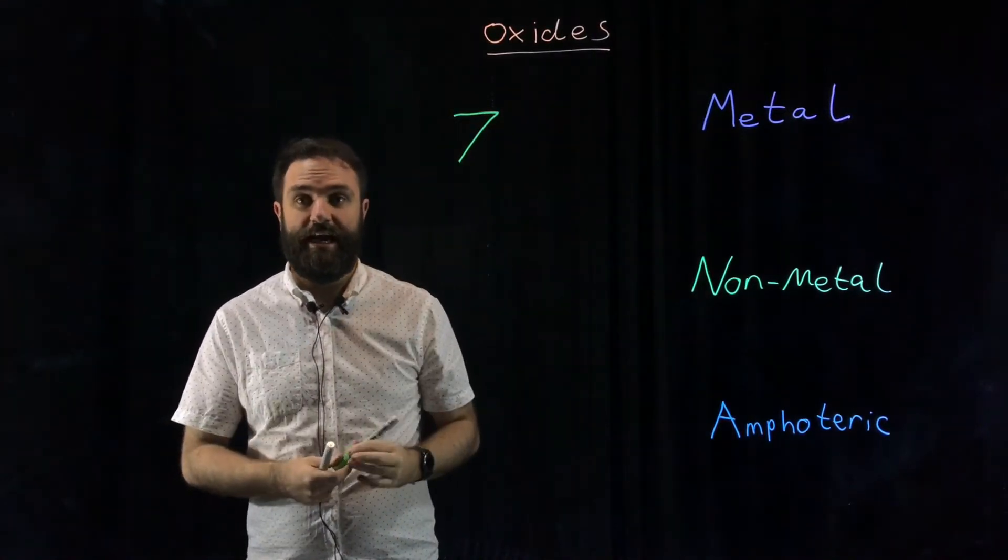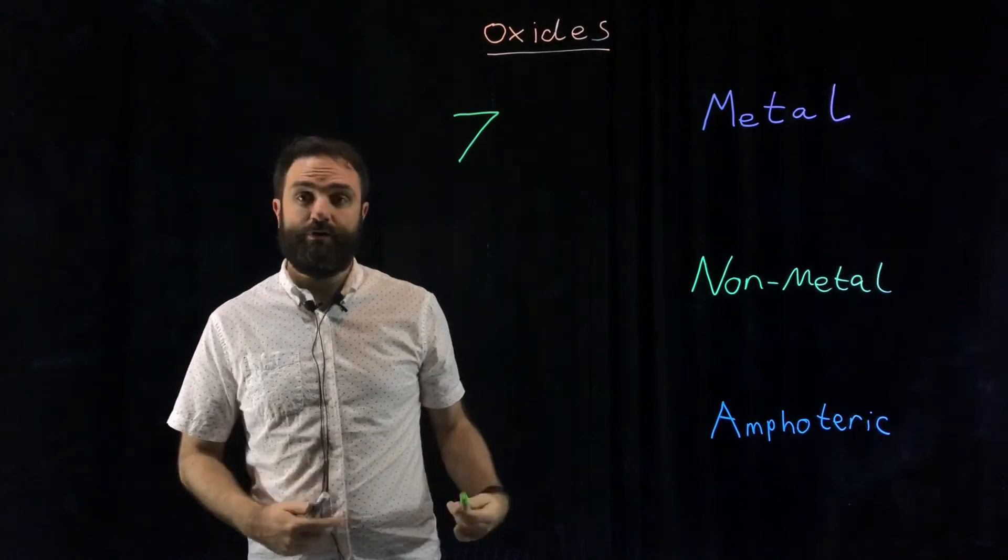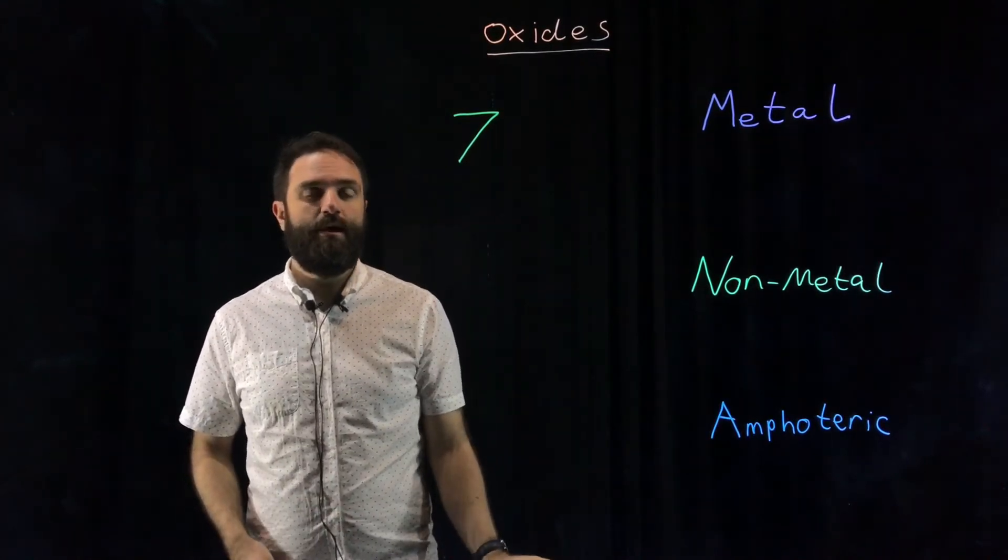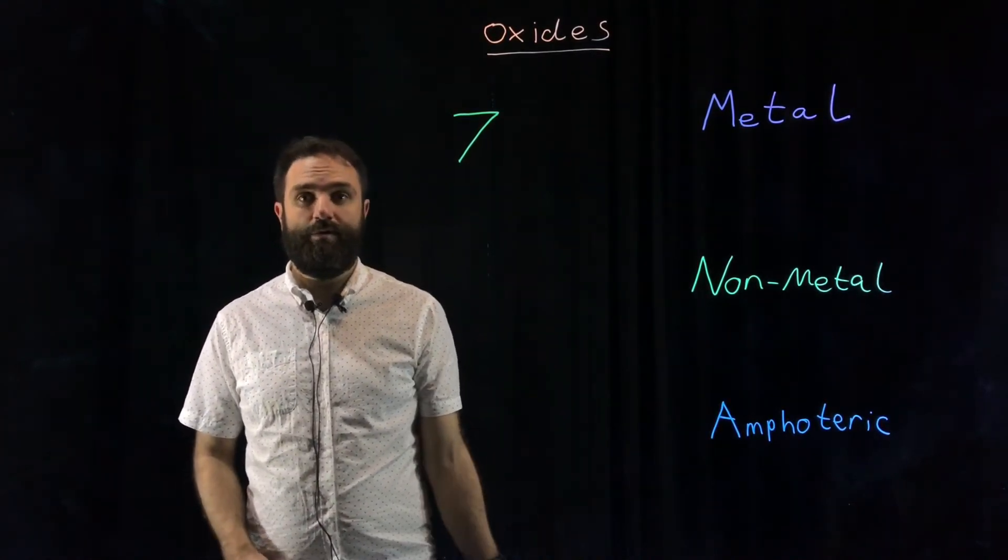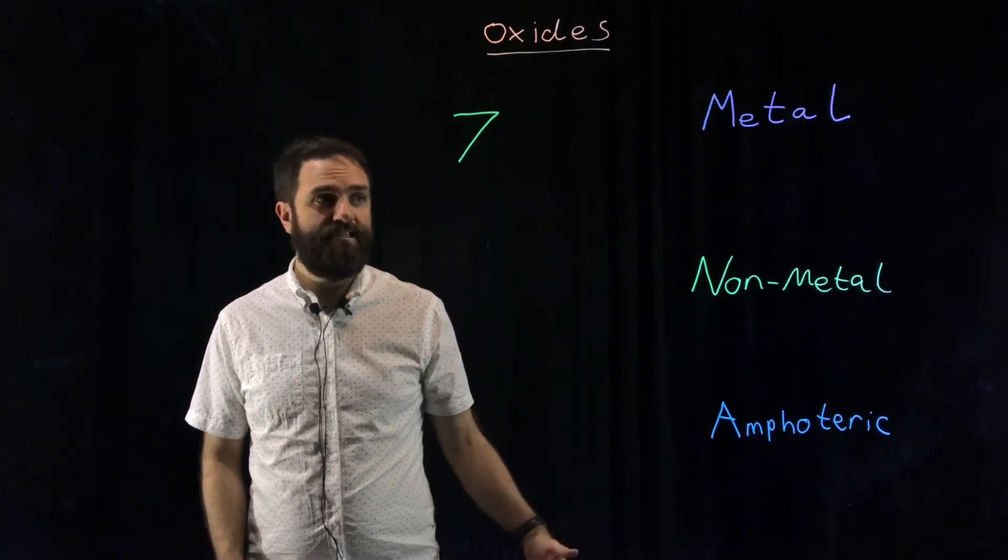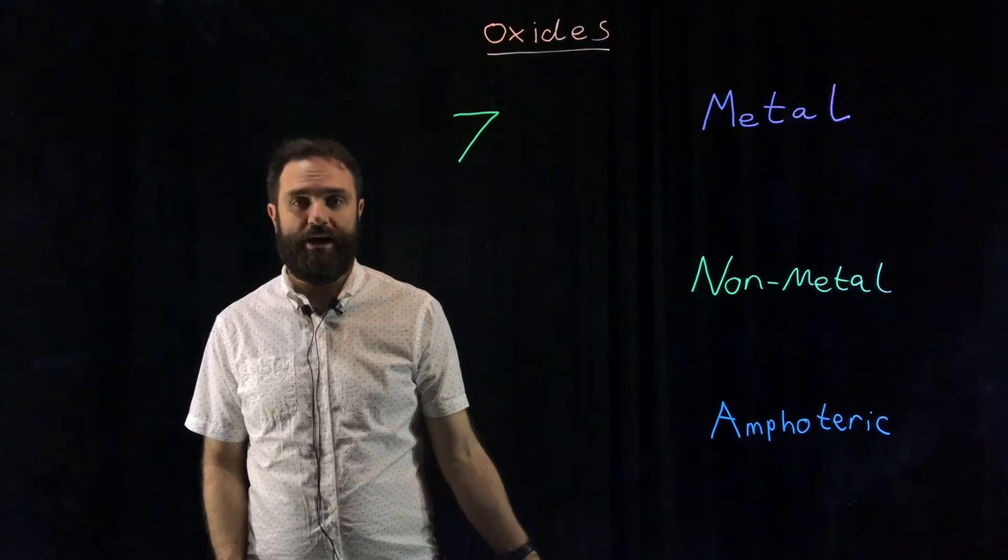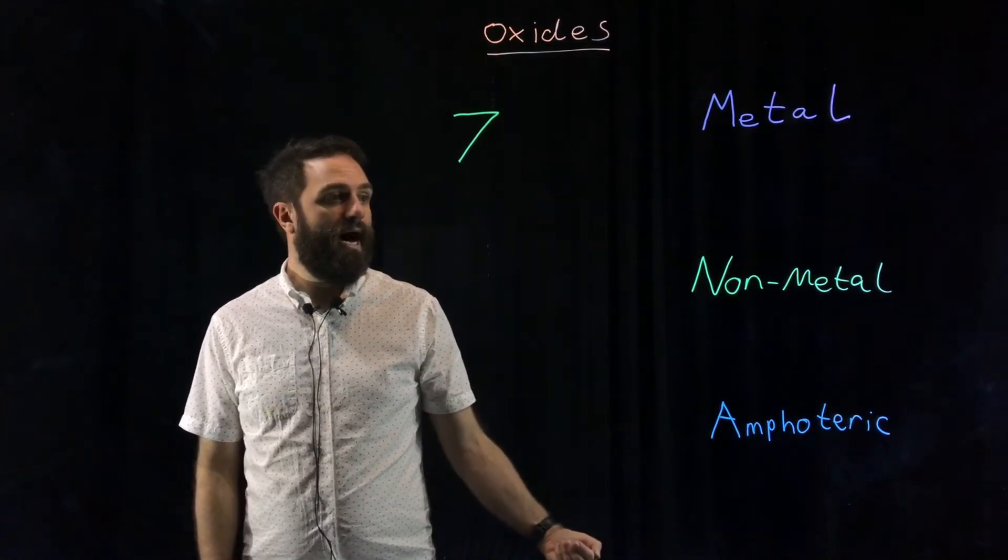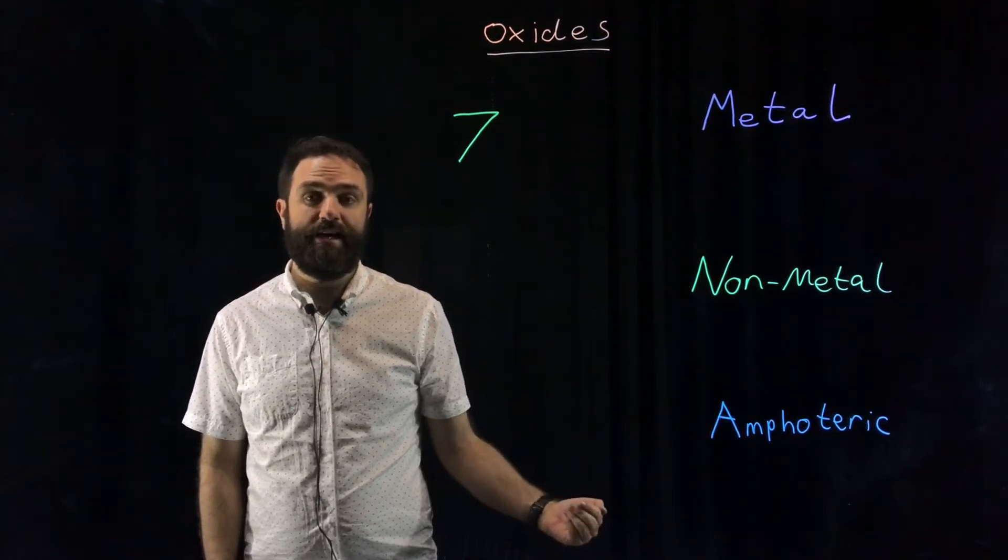Neutral substances don't react with acids and they don't react with bases. Remember, acids have a pH less than seven and contain hydrogen ions. They're proton donors.